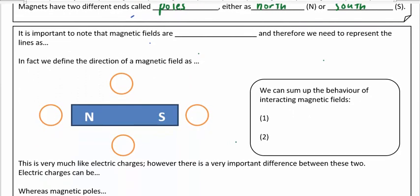Now, it's important to note that the magnetic fields are vectors. Because they are vectors, they have a direction. So we need to represent these lines as arrows.